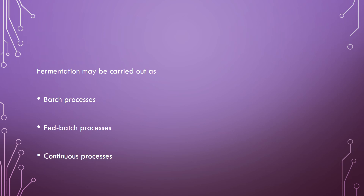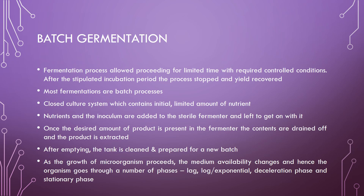The methods of fermentation are: first is batch process, second is fed-batch, and third is continuous. In today's lecture, we are going to discuss the batch process. Batch fermentation is a type of fermentation process that allows the process to proceed for a limited time with the required control conditions. After a stipulated incubation period, the process is stopped and the yield is recovered.